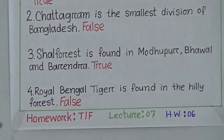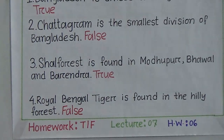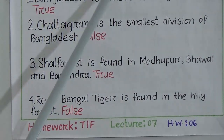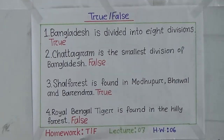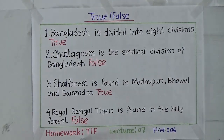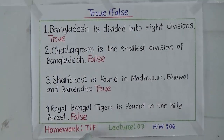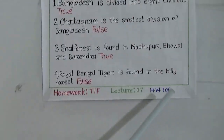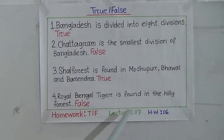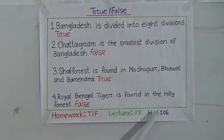Students, your homework will be true/false from Chapter 9. Don't forget to write the lecture and homework number — our lecture number is seven and homework number is six.